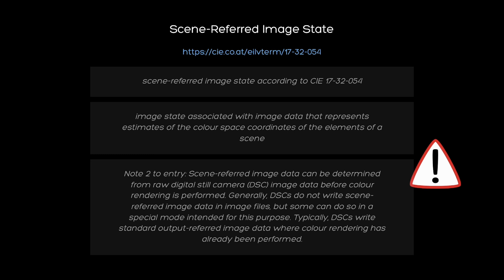It is not at all typical to work in color-rendered output-referred image state, at least not in high-end motion picture. Digital cinema cameras exclusively record, or should record, scene-referred image data. Also, the reference to a color space is given in the fundamental definition of scene-referred, and a color space by the definition of the term "color" is linked to the human observer. We will come to that later in detail.